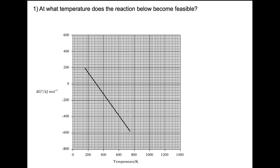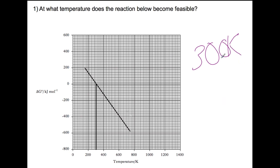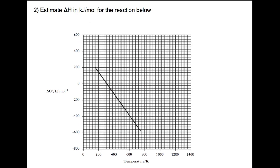When working out temperature, we have to look at the graph and find the point at which delta G becomes zero. We can see that on the graph here if we draw a line in from the zero point down. This crosses the temperature axis at 300 Kelvin, which is the temperature at which the reaction becomes feasible. To estimate delta H for the reaction, we need to extend the line until it crosses the Y axis. Delta H is the Y intercept for this reaction, and we can see that this crosses the Y axis at 400 kilojoules per mole.